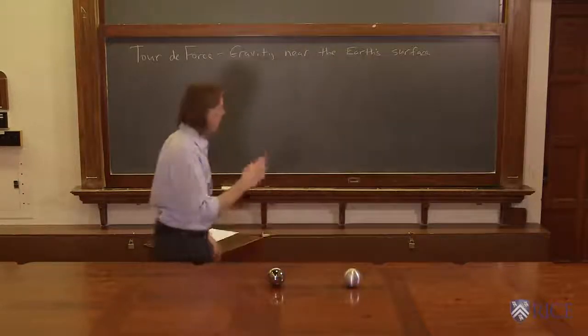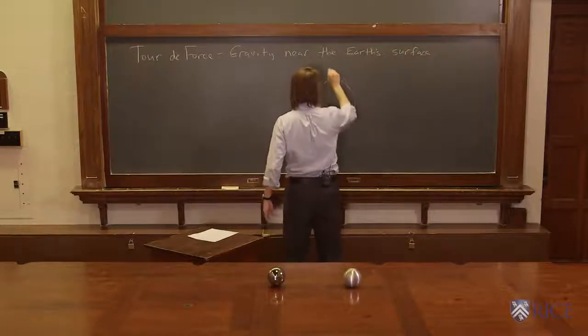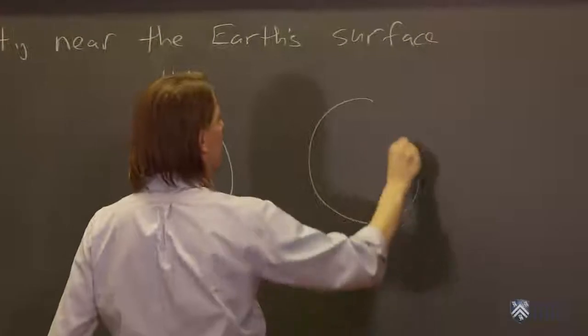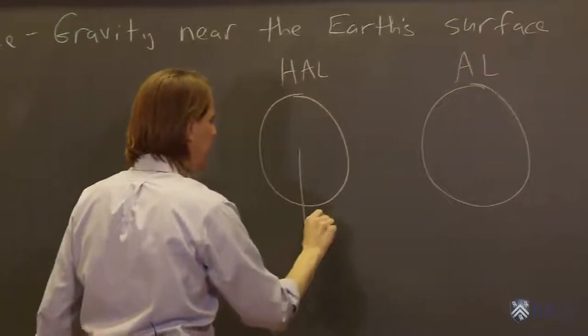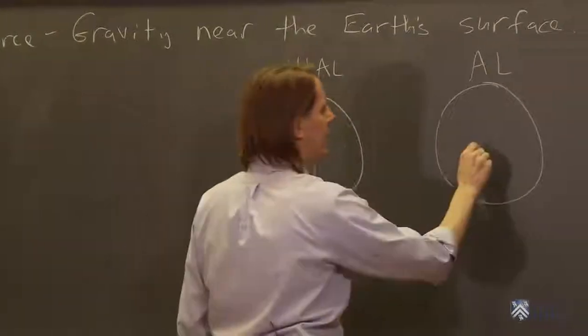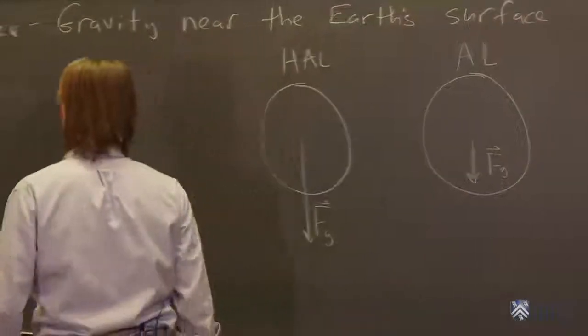And the reason is they're feeling a force. So let's look how to get that force. So here's HAL, and here is AL. And I'm telling you that they feel a force, FG. I'll call it the force due to gravity like that. And there's AL's force, a little foreshadowing in the length of that vector.